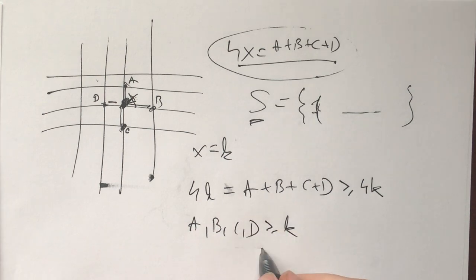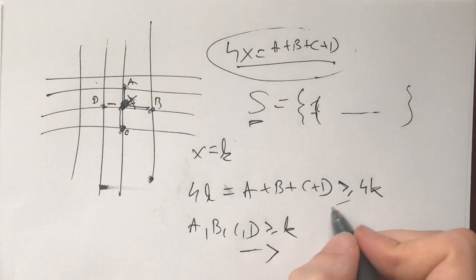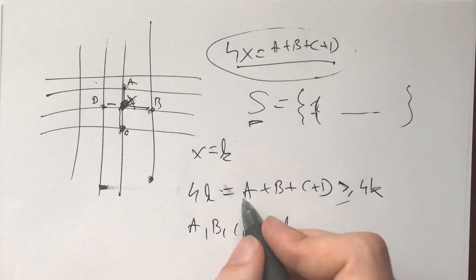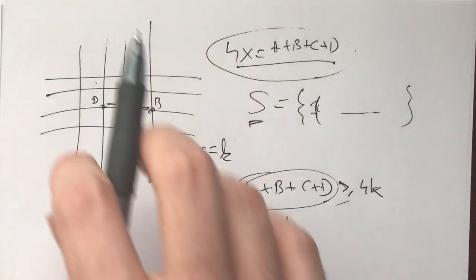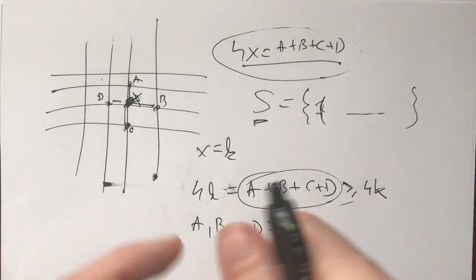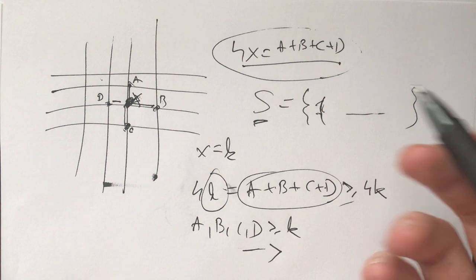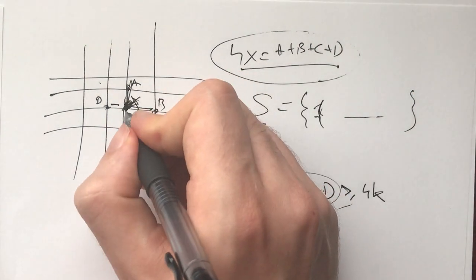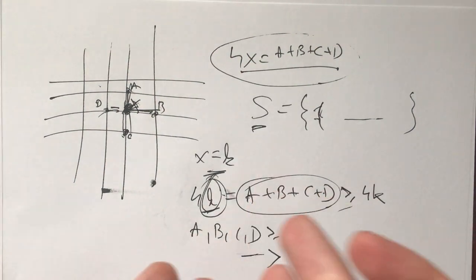If at any place we don't have equality — if we have a strict inequality — then this would be strictly greater than 4K, a contradiction. So all of A, B, C, and D must be equal to K. This means that for every lattice point labeled K, its up, down, left, and right neighbors are also going to be labeled K. That's basically what we proved here.